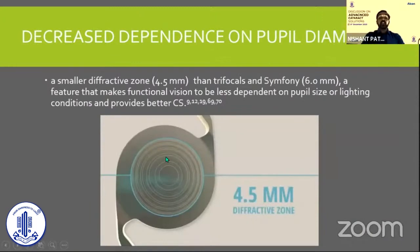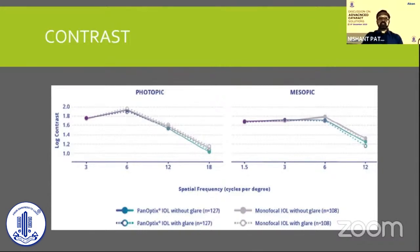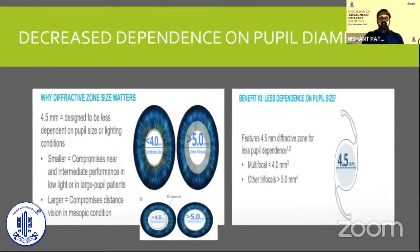Moreover, because of the increased diffractive area, the IOL has become less pupil-dependent and provides great contrast sensitivity compared to a bifocal IOL. The loss of contrast is not clinically significant when compared to a monofocal IOL — in both photopic and scotopic conditions, with and without glare. This is important for today's active lifestyle and driving in mesopic and scotopic conditions. Previously, reading up close in mesopic conditions — like reading a restaurant menu — was difficult, but this problem has been substantially solved.